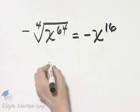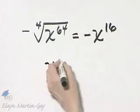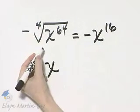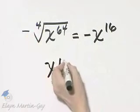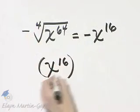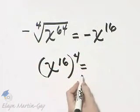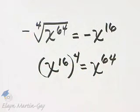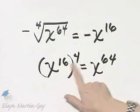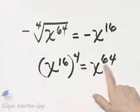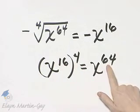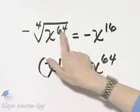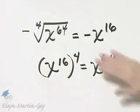Now let's concentrate on that x to the 16th for a moment. Why is the fourth root of x to the 64th equal to x to the 16th? It is because x to the 16th raised to the fourth power is x to the 64th. Remember, here we multiply exponents. So because here we multiply exponents, it is true that here we divide exponents. And here is my result.